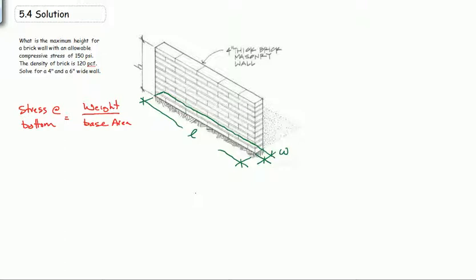For now I'm going to leave W just in terms of W. However, in this problem it's 4 inches or 6 inches. It will become apparent why I don't fill those in at this point. So the weight of the wall is equal to the density times the volume. In this case it's going to be 120 pounds per foot cubed times length times width times height.